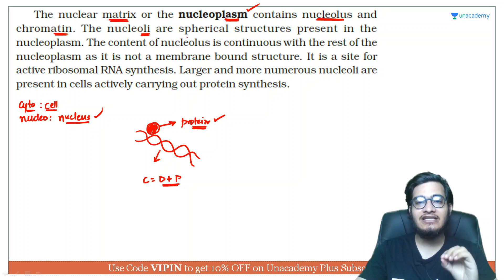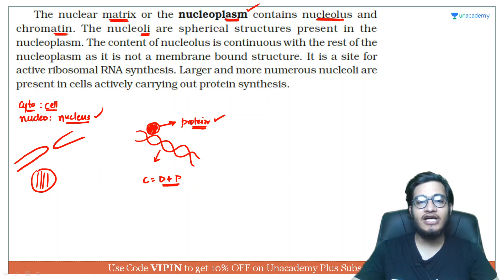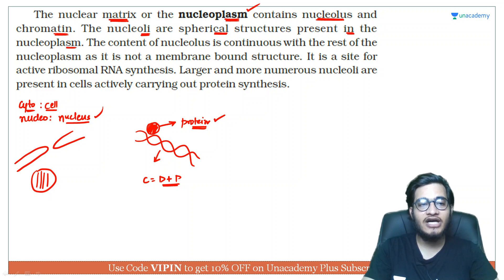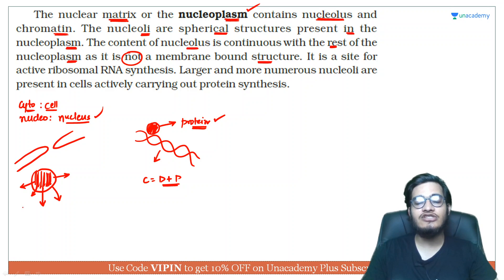The nucleolus consists of densely stained regions present inside the nucleus. It is a spherical structure present in the nucleoplasm, and it is quite dense as compared to the rest of the nucleoplasm. The content of the nucleolus is continuous with the rest of the nucleoplasm, as it is not a membrane-bound structure. Because there is no membrane over the nucleolus, its material interchanges with the entire nucleoplasm — there is no delimiting boundary.